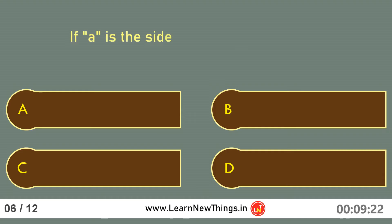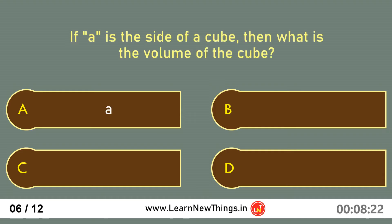If A is the side of a cube, then what is the volume of the cube? A power of 3, that is A³.